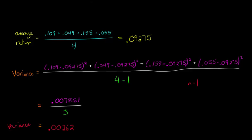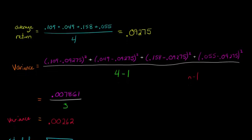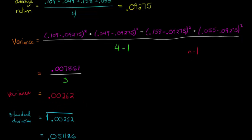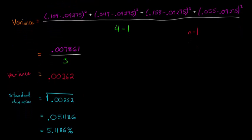But the variance is not the volatility. The variance is what allows us to calculate the standard deviation. Because the standard deviation is the square root of the variance. So we're going to take the square root of this .00262, and that's going to give us our standard deviation, which is .051186.